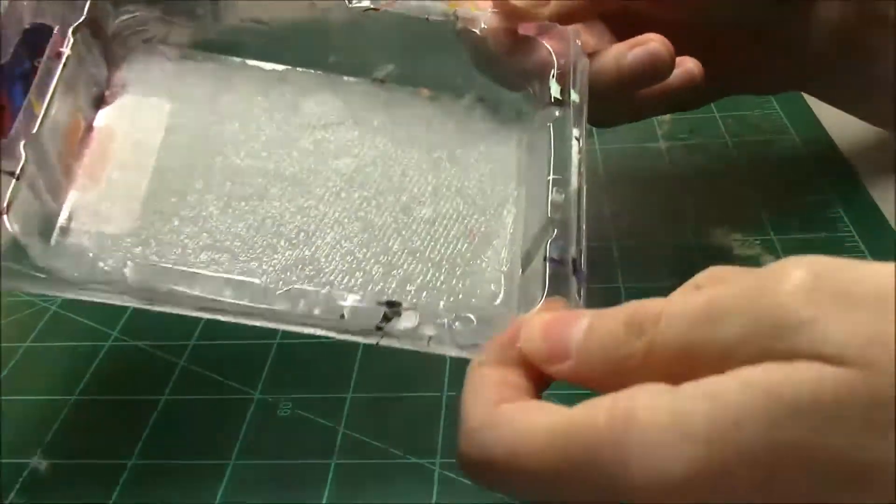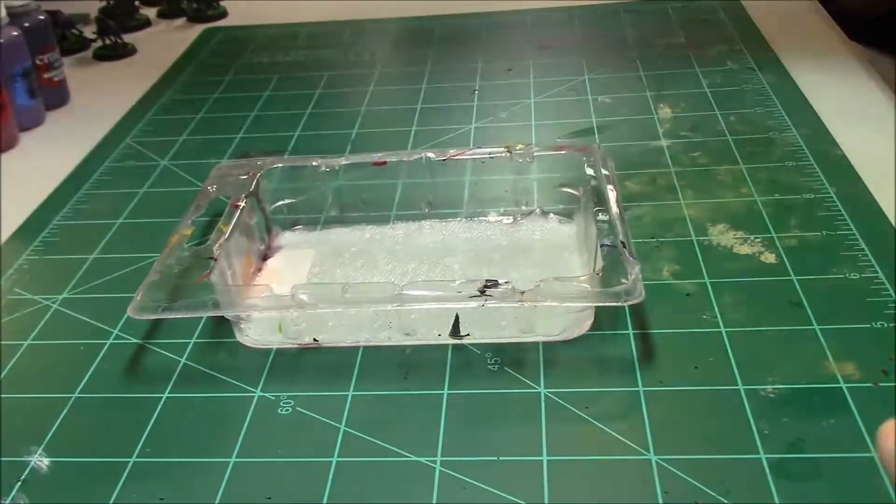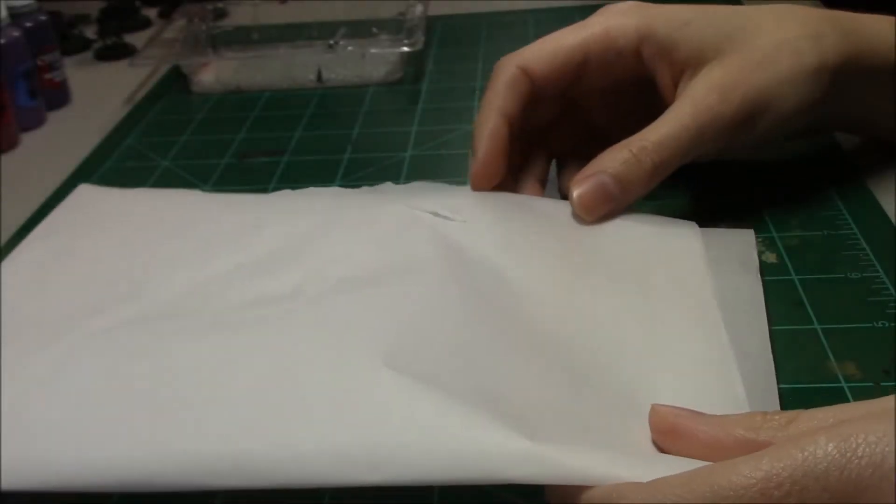Okay, so look, now there's water in it. Awesome. Now what you're going to do is take parchment paper. This stuff you can find at any grocery store. I think it's for cooking or something. I don't know, I don't cook.